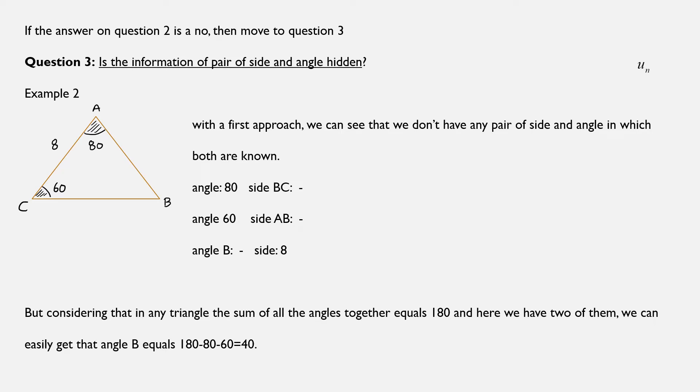But considering that in any triangle, the sum of all the angles together is equal to 180, and considering also that here we have two of these angles, we can easily get that the third angle, in our case angle B, will be known because the third one will be taken from the previously mentioned condition.